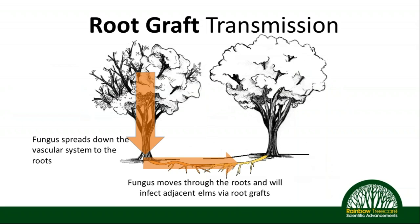Root graft transmission is the other way Dutch elm disease spreads. The fungus moves down the vascular system into the roots, where it also moves into adjacent trees through root grafts — interconnected roots underground that become channels for the Dutch elm disease pathogen to move from an infected tree to a healthy tree.